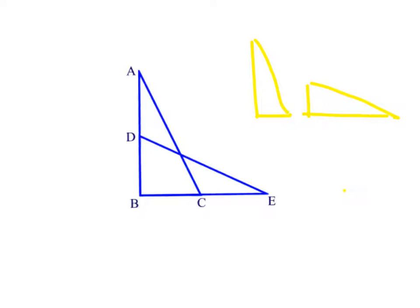So again, let me just outline those. The one standing upright: A, B, C here. And the one laying kind of on its side: D, B, E here.